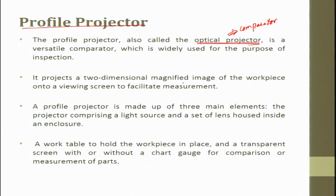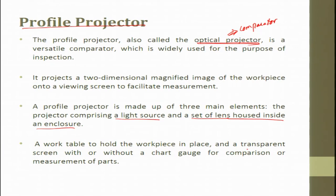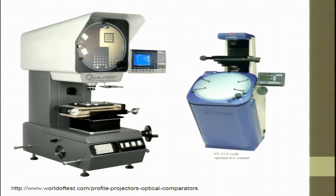It projects a two-dimensional magnified image of the workpiece onto a viewing screen to facilitate measurement. A profile projector is made up of three main elements: the projector comprising a light source and a set of lenses housed inside an enclosure, a work table to hold the workpiece, and a transparent screen with or without a chart gauge for comparison or measurement.